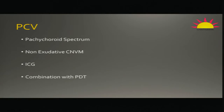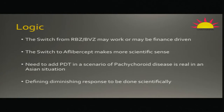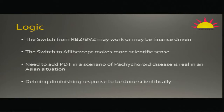It is important to identify PCV as a cause of anti-VEGF failure or recurrence. It is also important to look at RAP — retinal angiomatosis — as a cause, because the response to anti-VEGF is definitely dissimilar in regular CNVM or AMD compared to RAP. The switch between ranibizumab and bevacizumab may be finance-driven rather than anything else; the switch to aflibercept is more scientific. You need to add PDT in a scenario where you have diagnosed PCV, and when you define diminishing response, you have to give the drug continuously for two or three times to confirm it is a diminished response and not non-adherence to protocol.